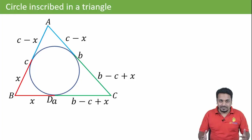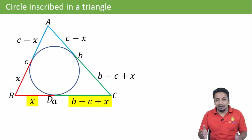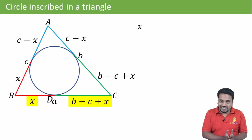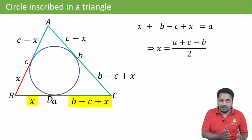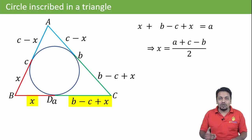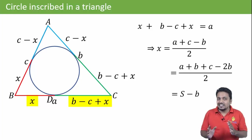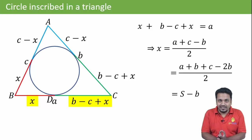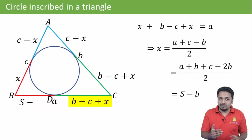We have the length of BC, which is given as a, which is equal to the sum of its two parts: x and b minus c plus x. So x plus (b minus c plus x) equals a. Solving, x comes out to be (a plus c minus b) upon 2. Adding and subtracting b in the numerator, we get the format s minus b. So x, which is the length of the tangents from B, will be s minus b.